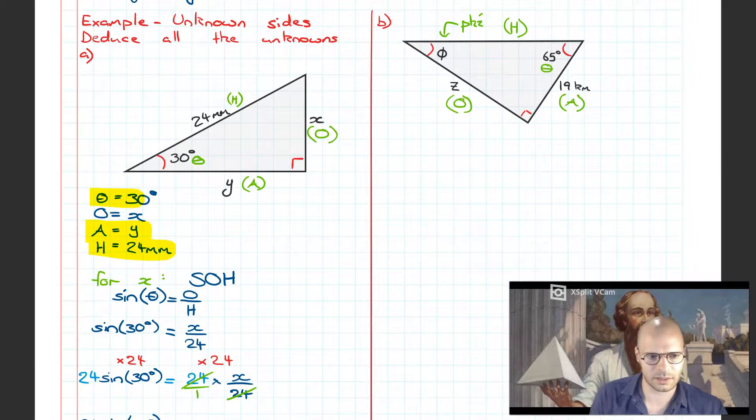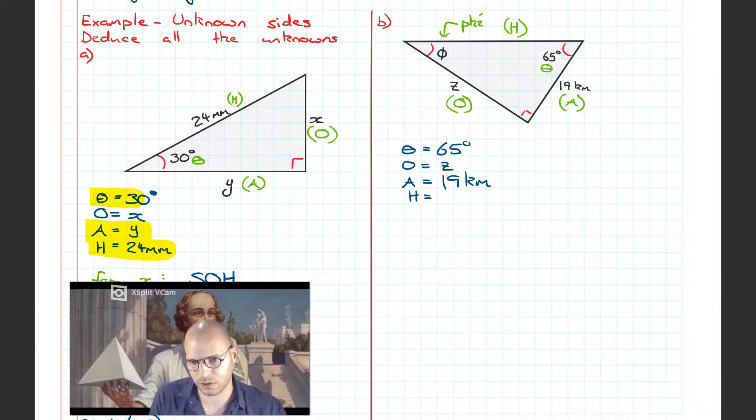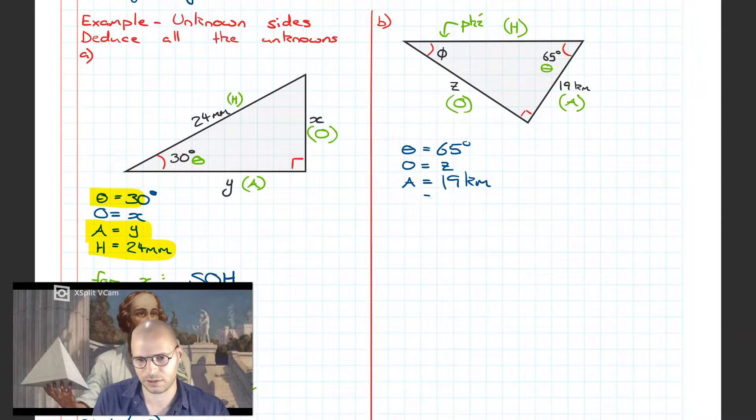Next step is I'm going to list all of the quantities. We've got theta which is equal to 65 degrees. We have the opposite which is Z, and we have the adjacent which is equal to 19 kilometers. I can write the hypotenuse but because it doesn't actually have a value, I'm just going to leave it out.